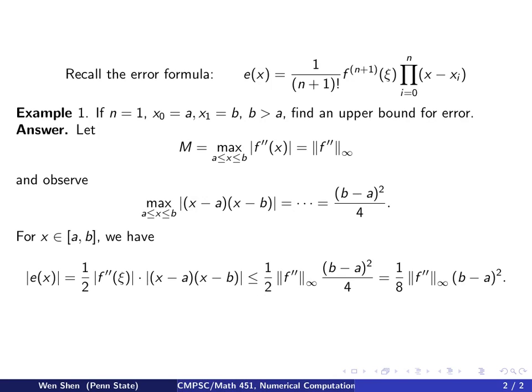And now you can just do some algebraic manipulation. Put 2 and 4 together and you get 1/8 f double prime L infinity norm times (b - a) squared.